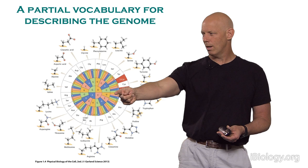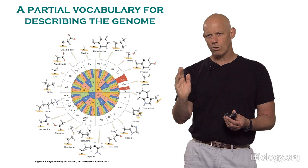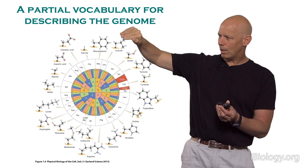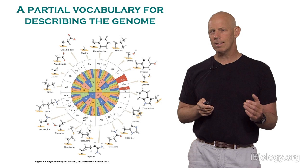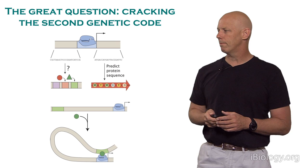Most people have seen this before. You start from the inner circle, which tells you the first codon — the first letter. Then you go to the next circle out for the second, and the third circle for the third. That triplet then tells you on the fourth ring which amino acid corresponds to that collection of nucleotides. However, the reason I say this is only a partial vocabulary is that it's in a certain sense deceptive — it makes it sound as though we've cracked this Rosetta Stone, when in fact we really haven't.